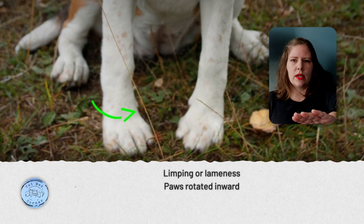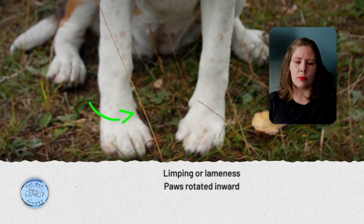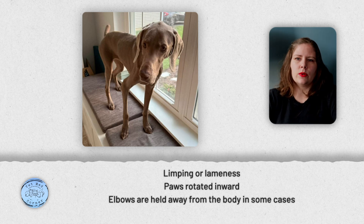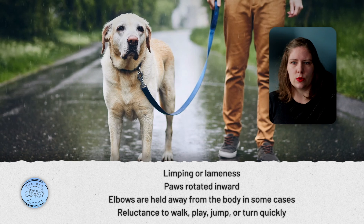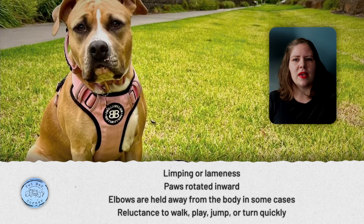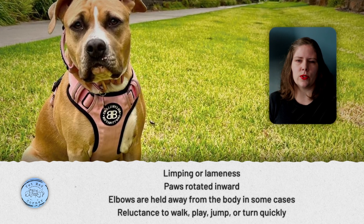These animals are also likely to hold their paws rotated a bit inwards because they're trying to relieve pressure on the most painful part of their elbow. Sometimes we will see the elbows being held out away from the body. In more moderate to severe elbow dysplasia, the animal may refuse to complete their walks, not want to play as much, and may hesitate with things like jumping or quick changes in direction.